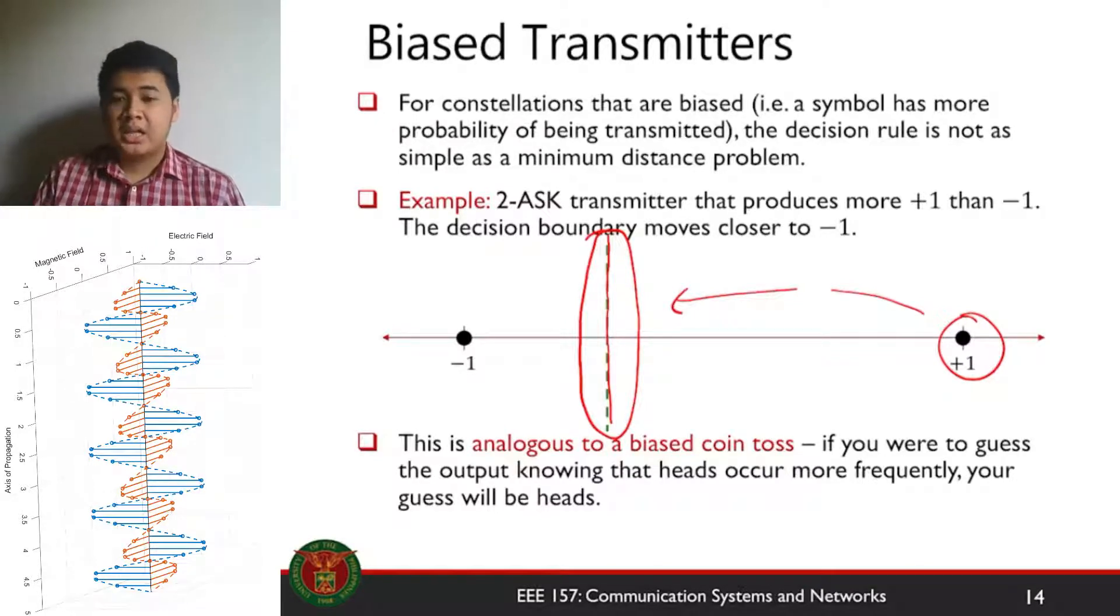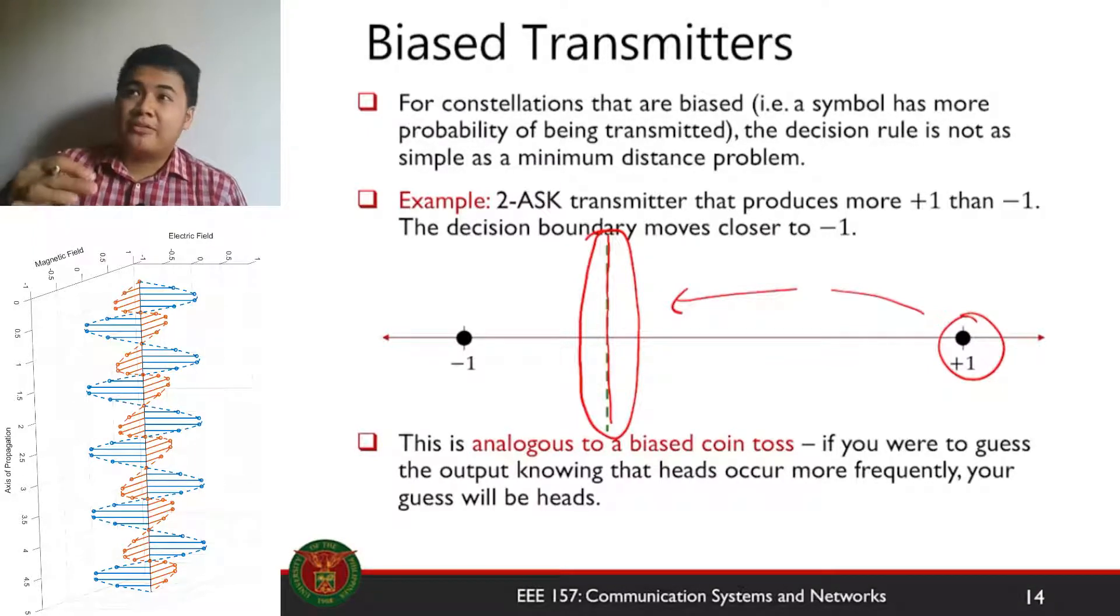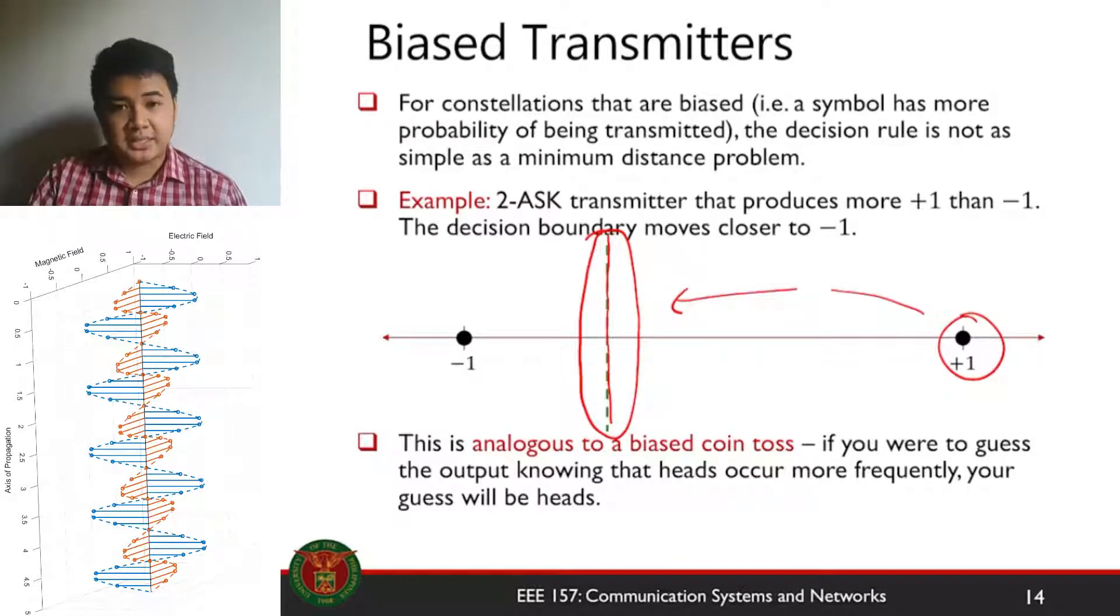If you have a biased transmitter, the way you set up the decision boundary will change. This is how we demodulate your biased transmitter. Other techniques can be used, like if we have a receiver that does not know this, maybe the receiver can adjust based on that, but that's already an advanced technique that requires advanced algorithms. If you already know that the transmitter is biased, then you design the receiver in a way such that the decision boundary is also biased, closer to one symbol compared to the other.